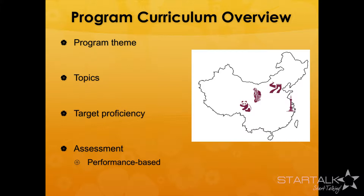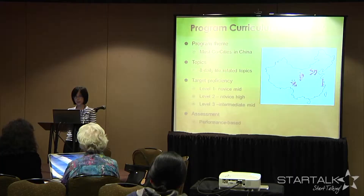Our program theme this year is 'must-go cities in China.' For those who know China, you will know the four cities: Beijing, Shanghai, Xi'an, and Chengdu — and this is also our logo for our T-shirt. We have about eight daily life-related topics. Our targeted proficiency for level one is novice mid and novice high, and then intermediate mid. We adopt a performance-based assessment model, so we have a lot of tasks for students to do, including a final group project.